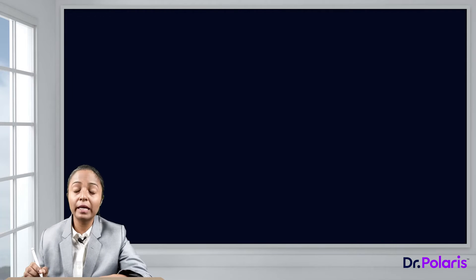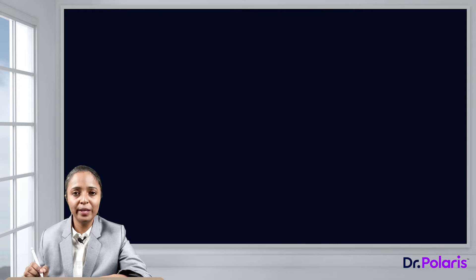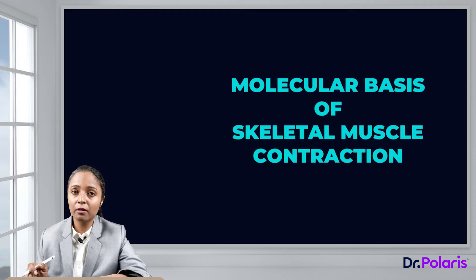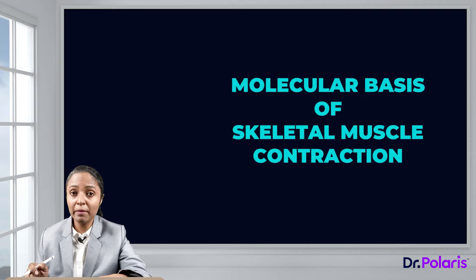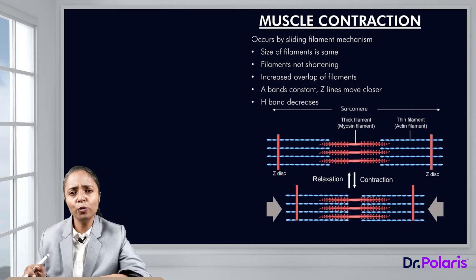Muscles convert chemical energy into mechanical energy, leading to the generation of force or movement. This is brought about by interaction of the various proteins present in the muscle fibers. This mechanism is known as the molecular basis of muscle contraction. So how do skeletal muscles contract?